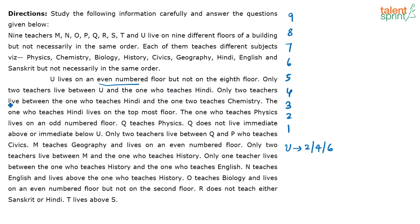It is given that only two teachers live between U and the one who teaches Hindi. So there are two teachers between U and the Hindi teacher. Next, only two teachers live between the one who teaches Hindi and the one who teaches chemistry. I've just written down whatever is given — I don't know yet who is on top or bottom.